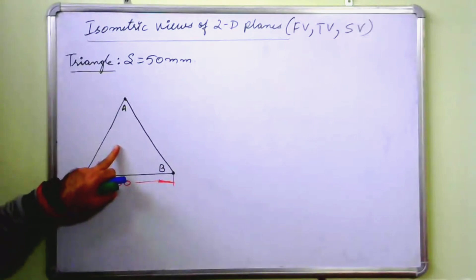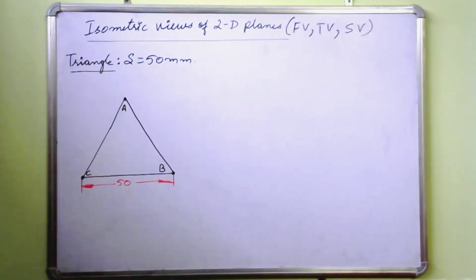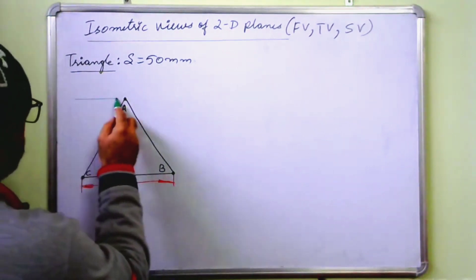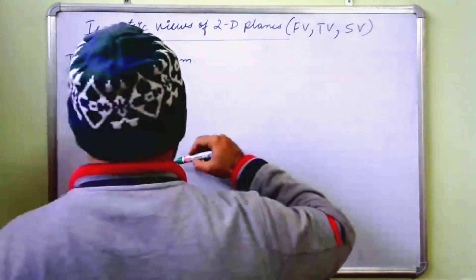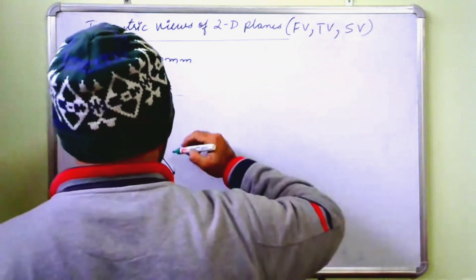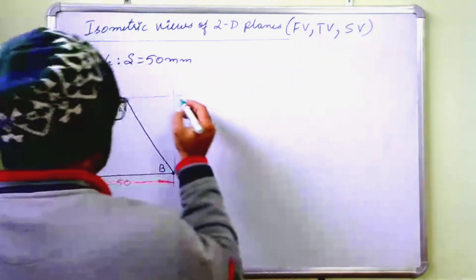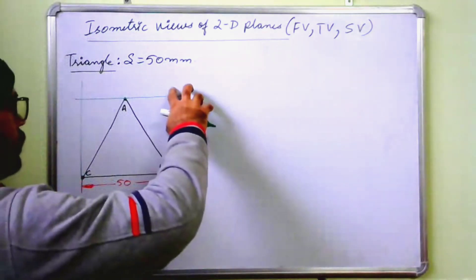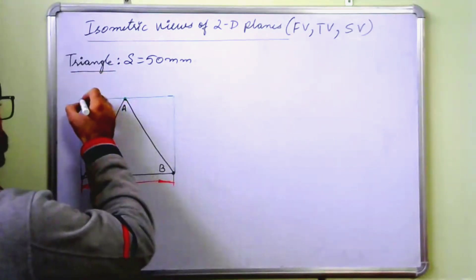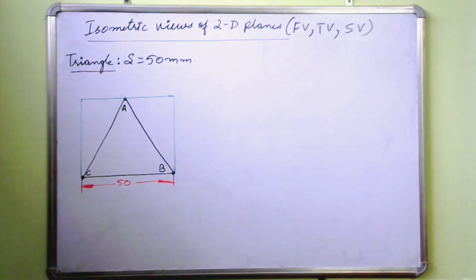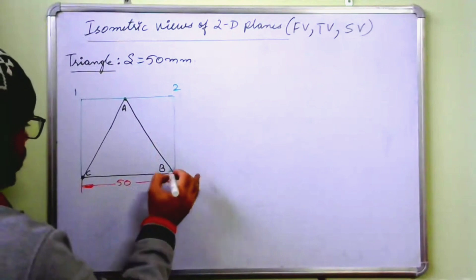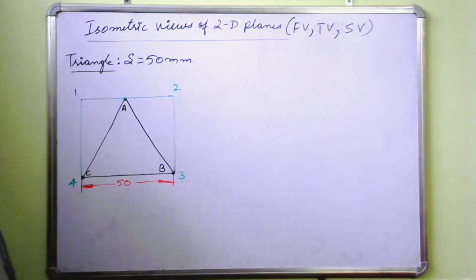So after drawing the actual view of the triangle, you just enclose it in a box. In a box means you just enclose it in a rectangle, like this. It will be like this, so this is, let us say this is 1, this is 2, this is 3 and this is 4.